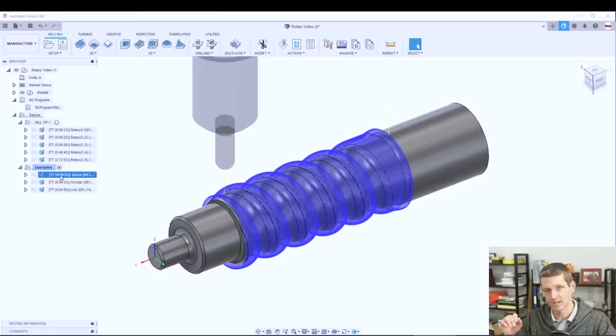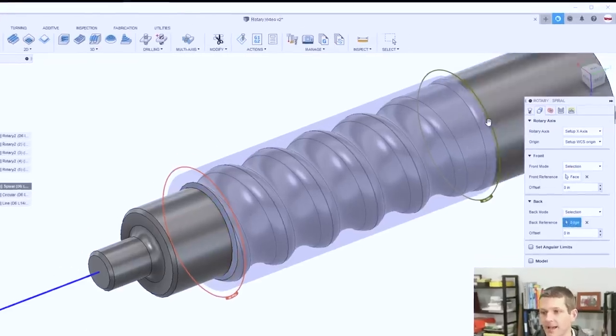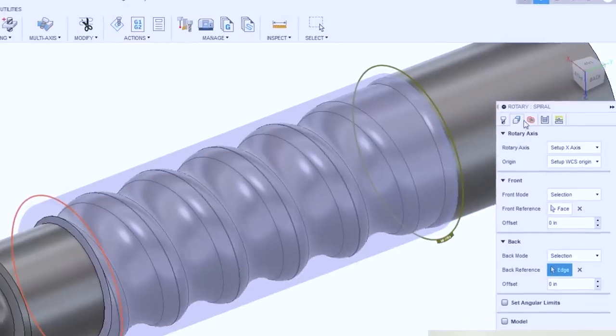On a Tormach, in any machine that doesn't have dynamic work offsets, your fourth axis work coordinate system has to be on the center of rotation. So in this case, the Y and the Z have to be on the center line of our MicroArc. We're using the front face and this back edge here to constrain the area of work.